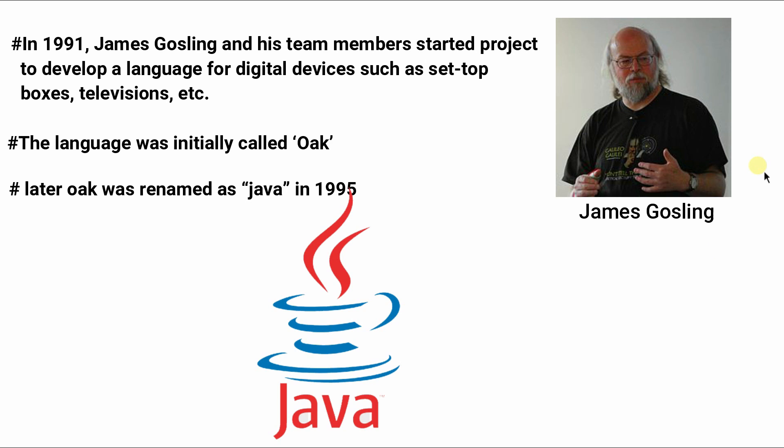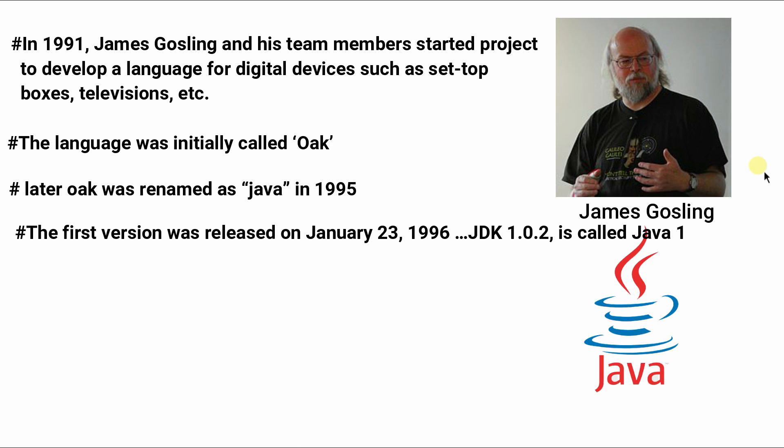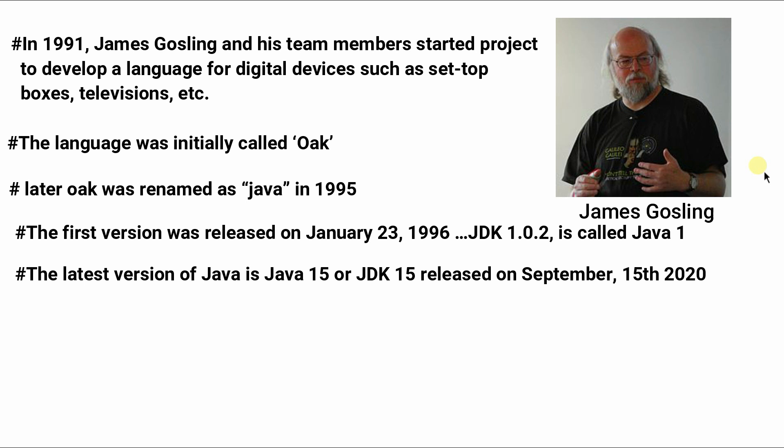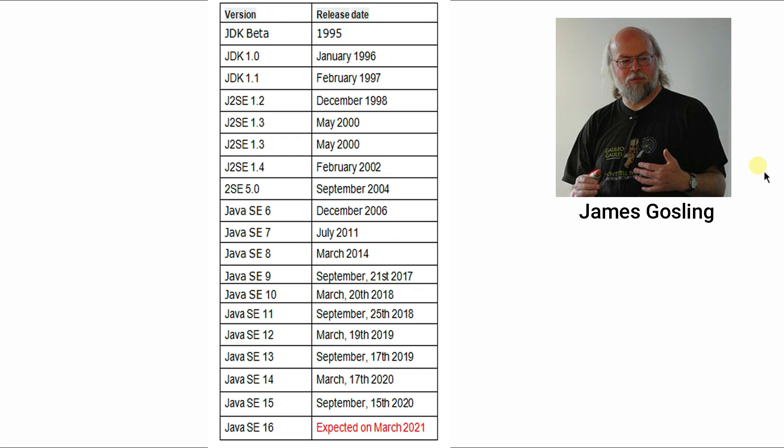Keeping the coffee cup in mind, James Gosling created the original design of Java's logo. You may have noticed that the logo of Java is a digital cup shape. The first version was released on January 23, 1996 — JDK 1.0, called Java 1. After that, many versions were released with new features. The latest version of Java is Java 15, JDK 15, released on September 15, 2020. Here you can see the Java versions listed below.